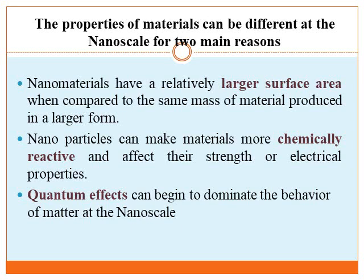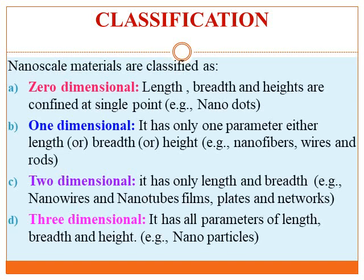An additional reason for different properties at the nanoscale is quantum effects. Quantum effects involve the emission or absorption of photons at the surface of materials. The surface of the materials can absorb different photons under different conditions. Quantum effects begin to dominate and the behavior of nanomaterials is different as compared to bulk materials.